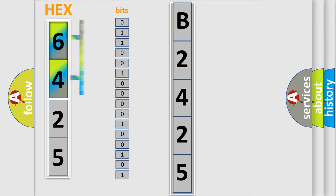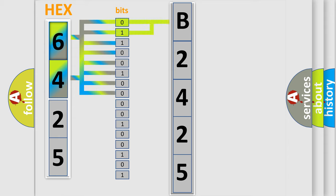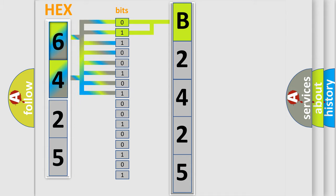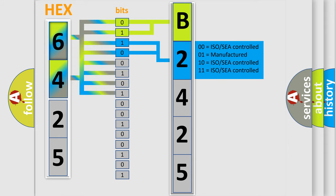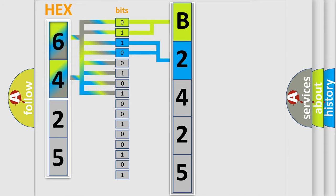One bit is the basic unit that each computer works with. The bit has two logical states: zero, the low level, and one, the high level. By combining the first two bits, the basic character of the error code is expressed. The next two bits determine the second character. The last four bits of the first byte define the third character of the code.